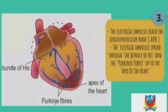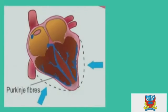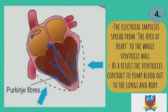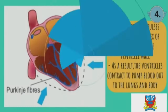The electrical impulses reach the atrioventricular node (AVN) and spread through the bundle of His and the Purkinje fibres up to the apex of the heart. The impulses then spread from the apex to the whole ventricular wall, causing the ventricles to contract and pump blood out to the lungs and the body.